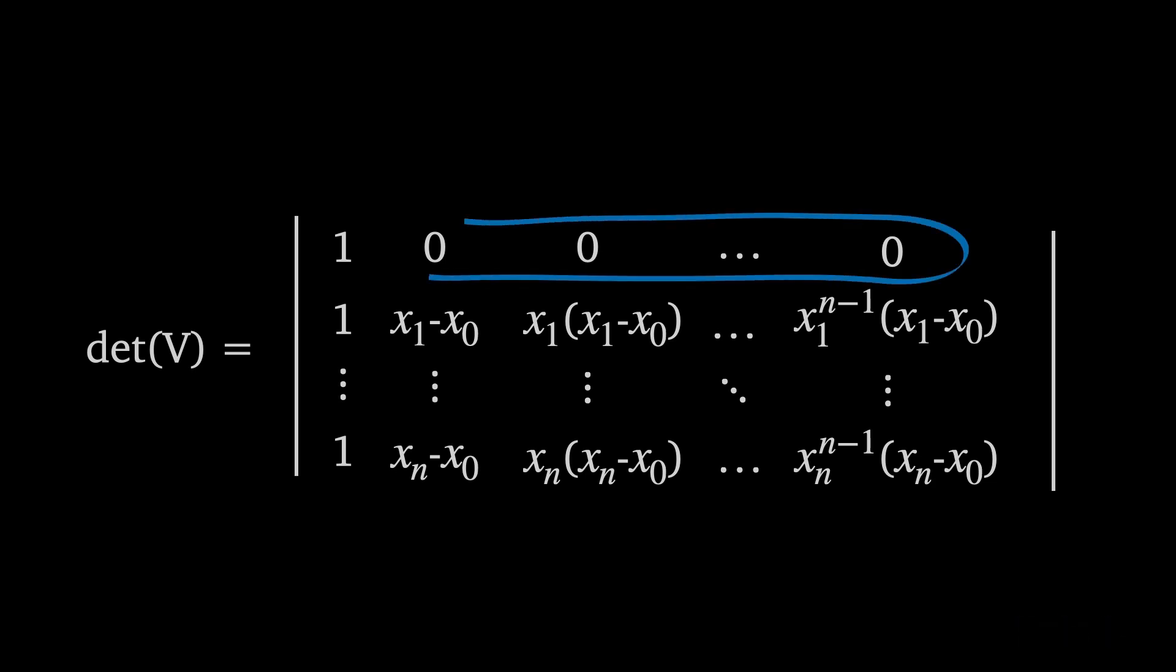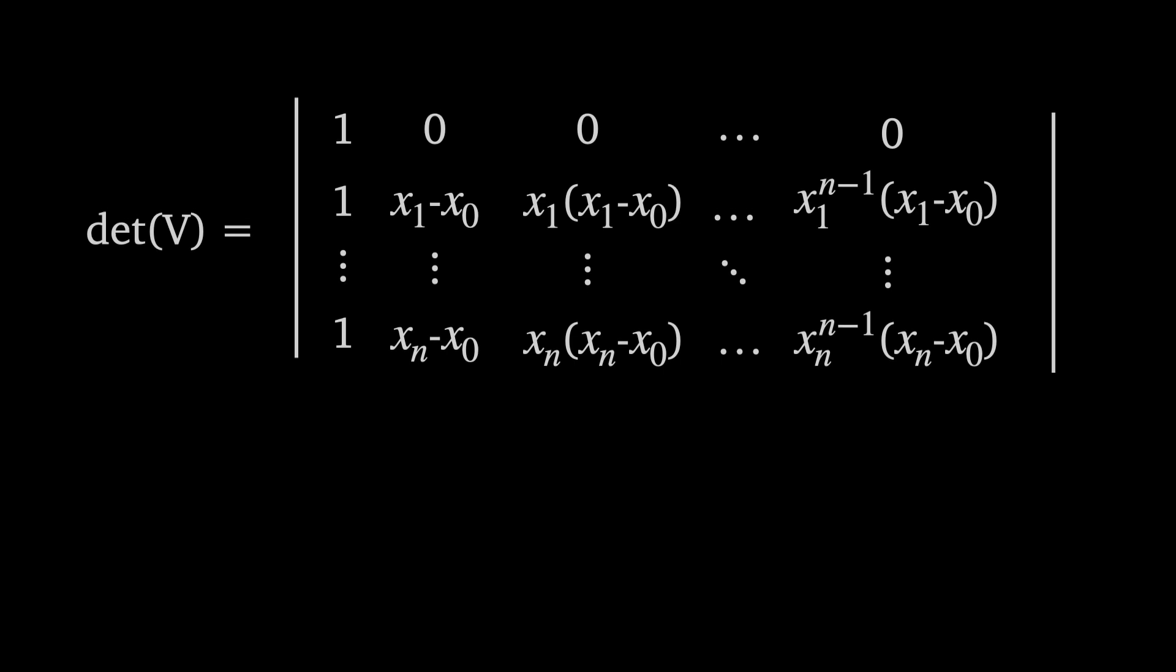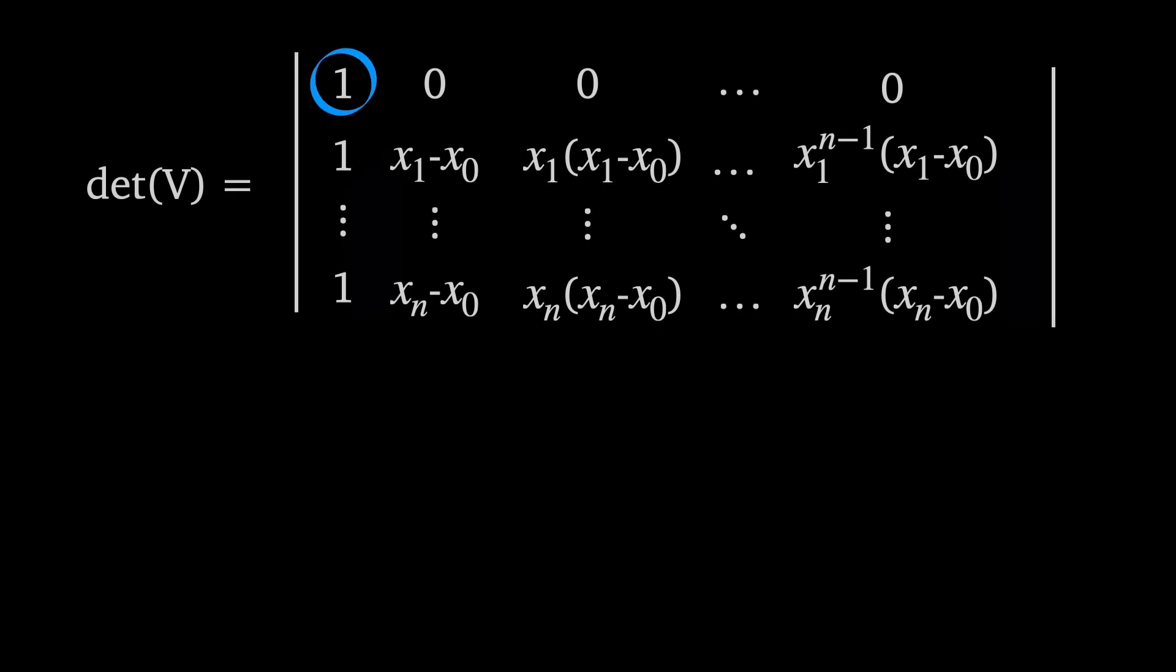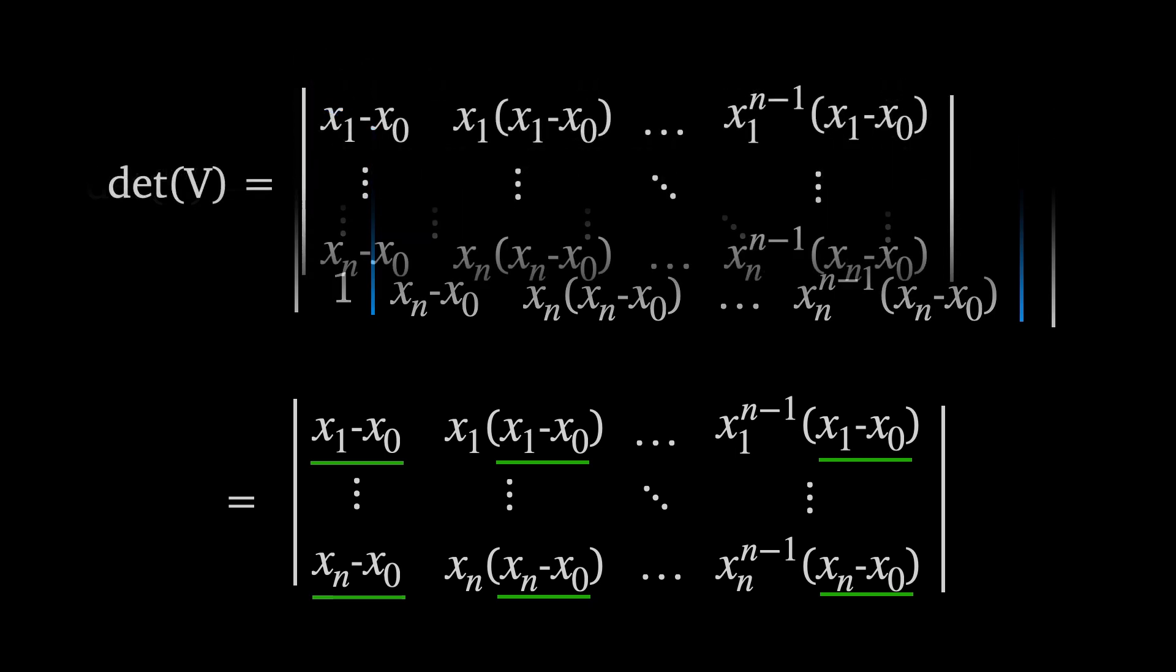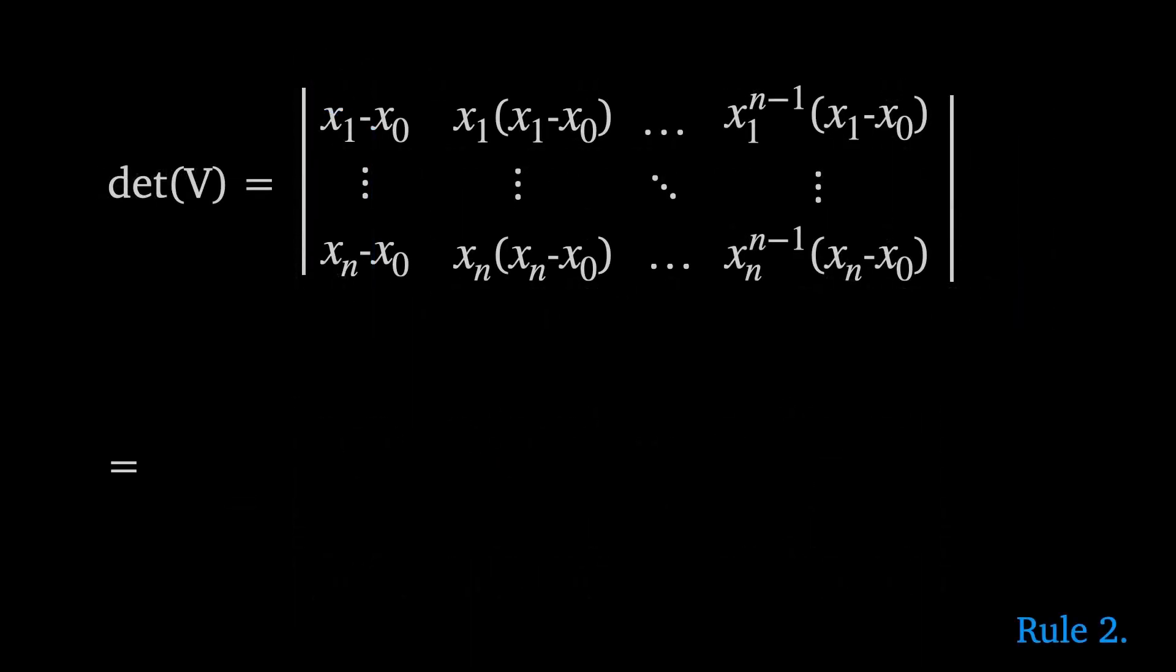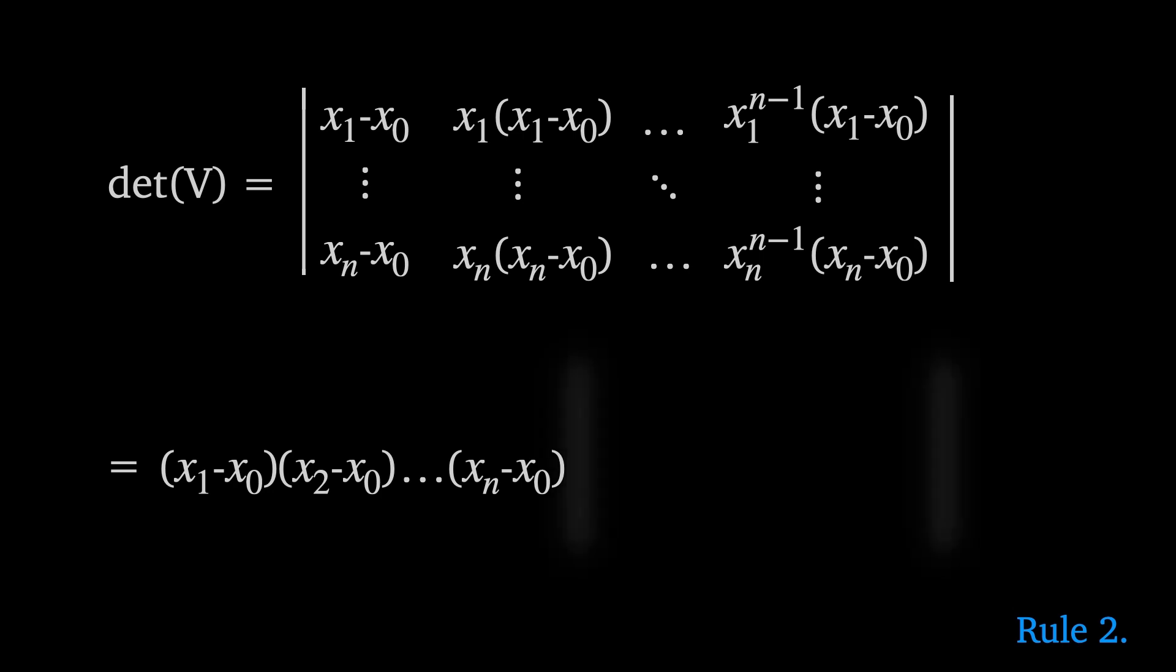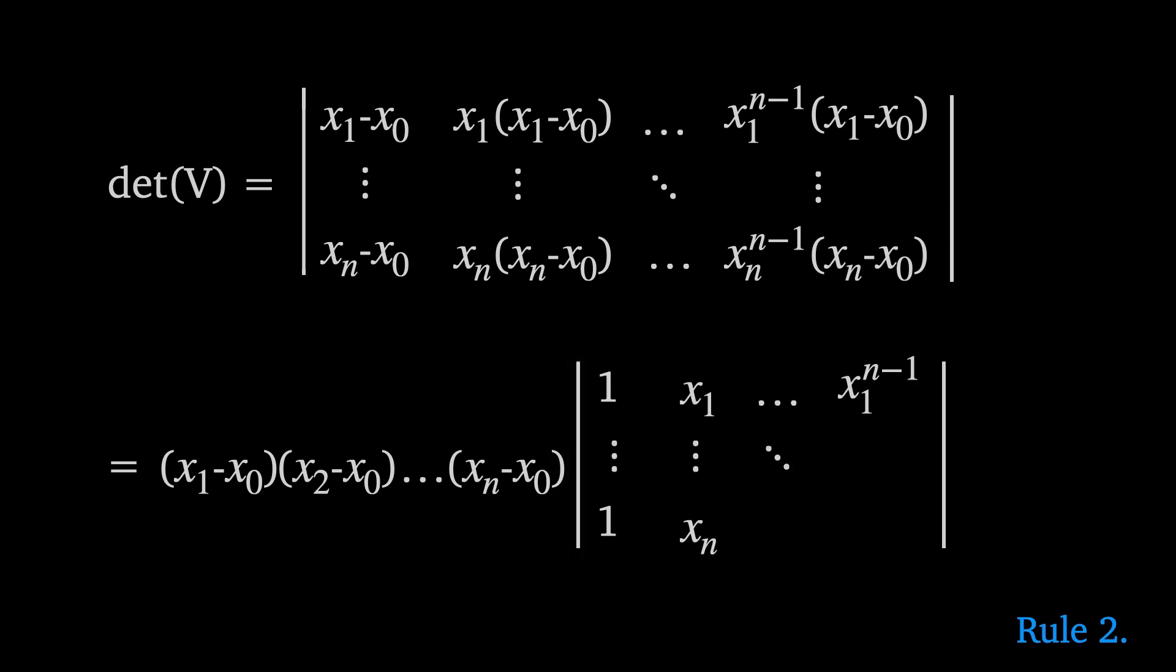These zeros here now become useful. The determinant now becomes 1 times the determinant of this smaller matrix by Laplace expansion. Now each row contains the factor x sub i minus x sub 0. So here is where we use rule 2. By rule 2 we can pull out each of these factors x sub 1 minus x sub 0 to x sub n minus x sub 0.